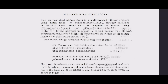Let's see how deadlock can occur in a multithreaded Pthread program using mutex locks. The pthread_mutex_init function initializes an unlocked mutex. Mutex locks are acquired and released using pthread_mutex_lock and pthread_mutex_unlock respectively. If a thread attempts to call pthread_mutex_lock and it blocks the thread until the owner of the mutex lock invokes pthread_mutex_unlock. Two mutex locks are created in the following code example.